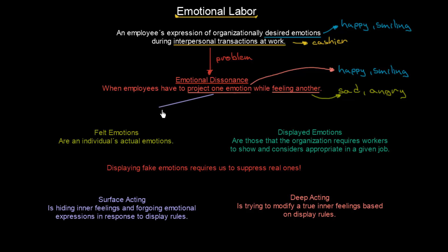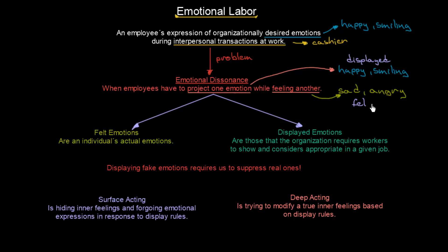We have something called felt emotions, and then we have displayed emotions. Felt emotions are an individual's actual emotions — so that we are sad and angry. On the other hand, there are displayed emotions, which are those that the organization requires workers to show and considers appropriate in a given job. You can see that emotional dissonance occurs between these two: when we have some felt emotions and they are not the same as the displayed emotions.